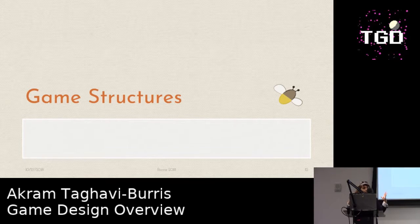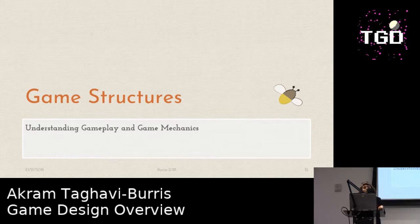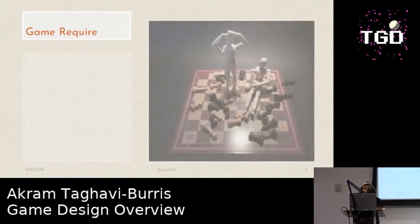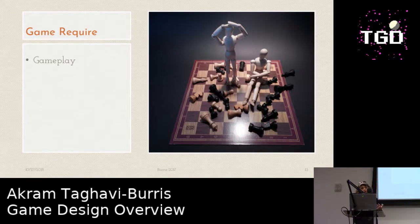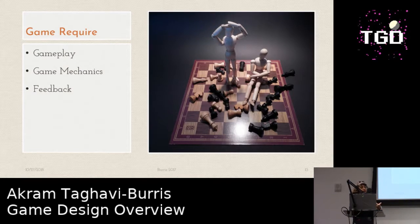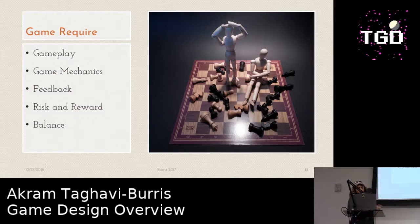As you get into the development phases, you don't want to just jump in and start coding. You want to think about the structure. One of the things we emphasize with our students is the terms gameplay and game mechanics. All games require good gameplay, game mechanics, feedback, risk and reward, and balance. To talk about gameplay and game mechanics, we first need to talk about the elements required to make a game, which are broken up into two parts: formal elements and dramatic elements.